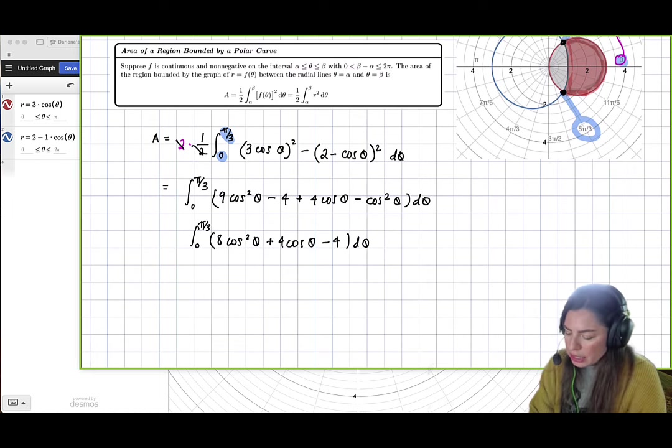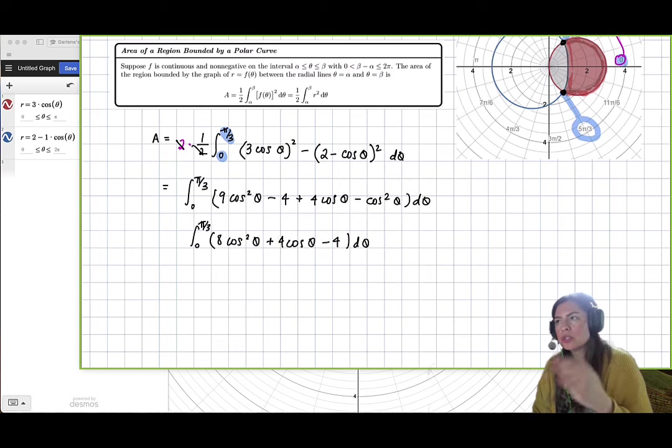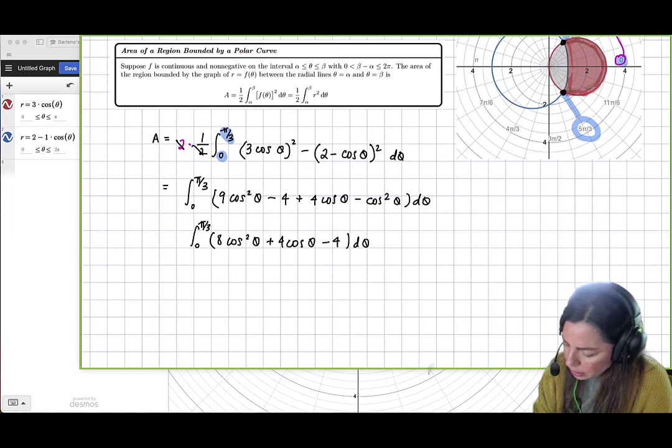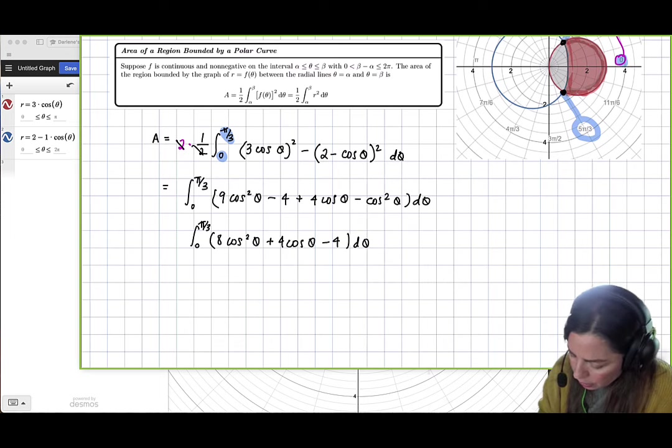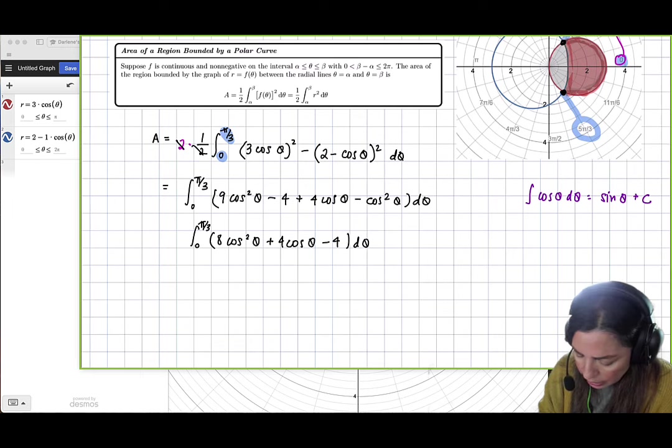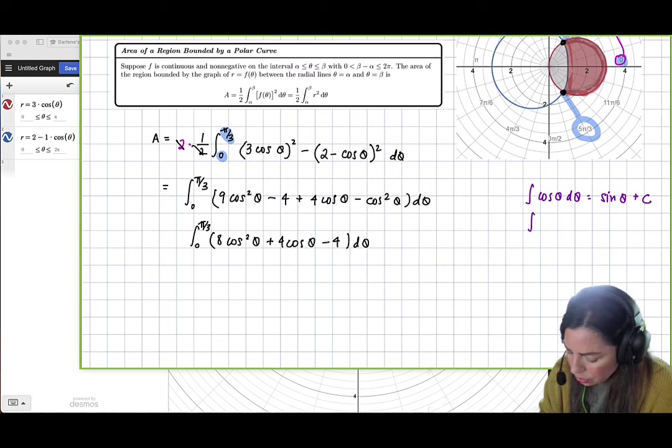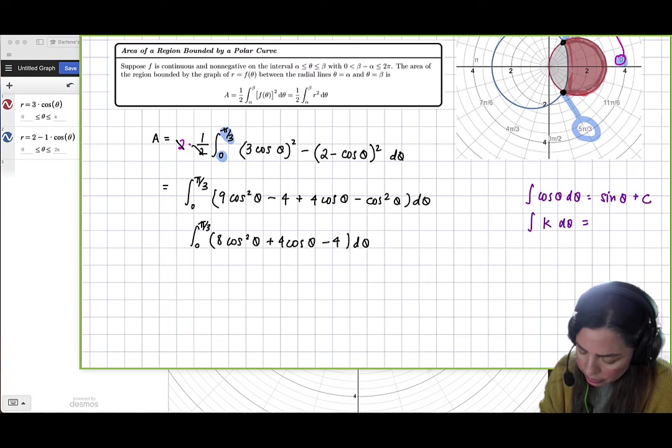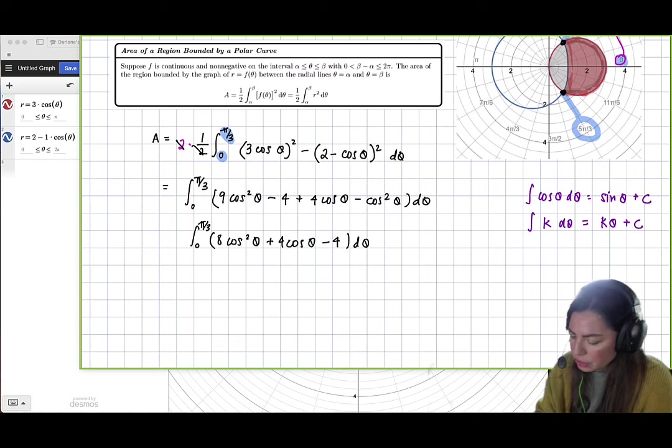So I do see that these are going to be pretty straightforward in integrating, right? Because we do know that, if I put over here, the integral of cosine theta d theta is just a positive sine theta plus c if it's indefinite, right? And then we do know that the integral of a constant k, d theta is just linear, right? So it's just going to be k theta plus c. So we have these two down.